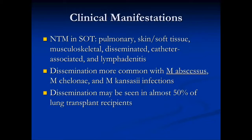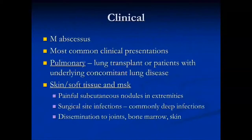Clinical manifestations in organ transplant patients with NTM infections most commonly include pulmonary, skin and soft tissue, musculoskeletal, disseminated or bacteremic, catheter-associated, and lymphadenitis presentations. Dissemination is more common with M. abscessus, M. chelonae, and M. kansasii, and some studies show dissemination can be as high as almost 50 percent in lung transplant recipients with NTM infections. For M. abscessus specifically, the two most common presentations are pulmonary and skin/soft tissue, with deep musculoskeletal infections also seen.